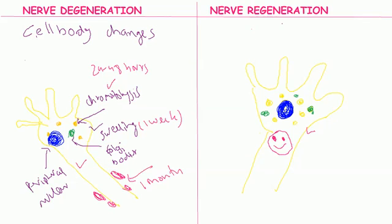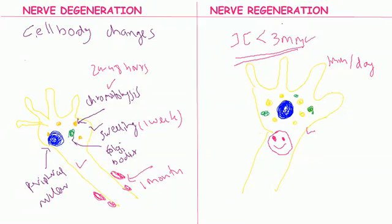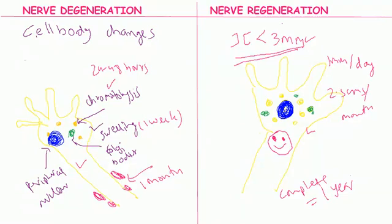Some key points in nerve regeneration: the distance between the two cut ends should always be less than 3mm for regeneration to occur. The speed of regeneration is about 1mm per day, or 2.5cm per month, and regeneration is completed in about 1 year.